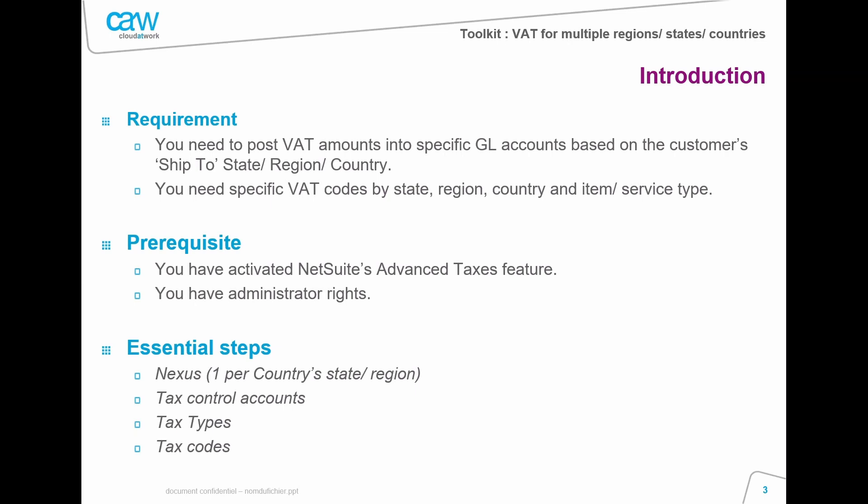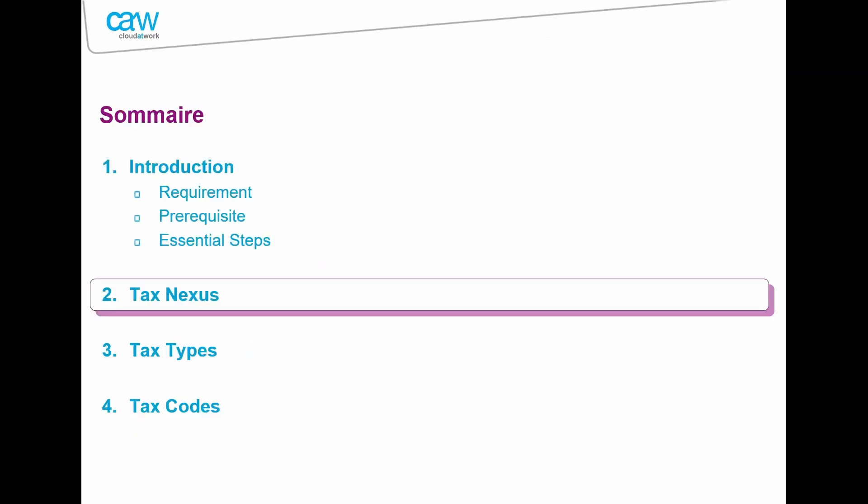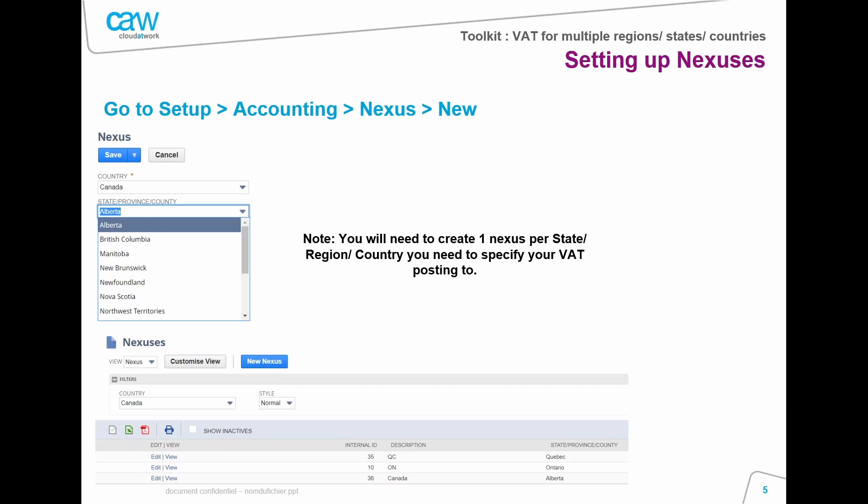The first step is the nexuses, the second is the tax control accounts, the third is the tax types, and then the tax codes. Starting with tax nexuses: if you go to Setup > Accounting > Nexus > New, you will be able to create a new nexus. A nexus is a way to group and break down your tax regions within your own country.